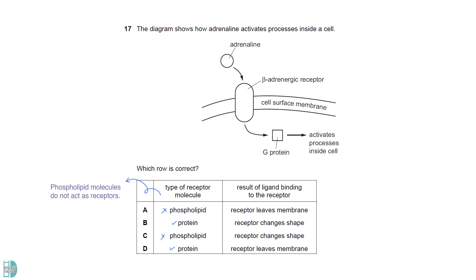Phospholipid molecules do not act as receptors. It is the proteins on the cell surface membranes that act as receptors. The binding causes the receptor to change its shape. This leads to the activation of G protein. The receptor does not leave the membrane.